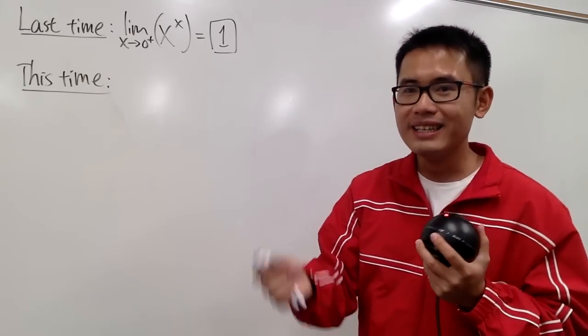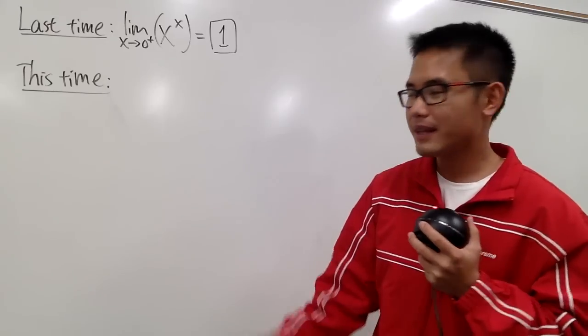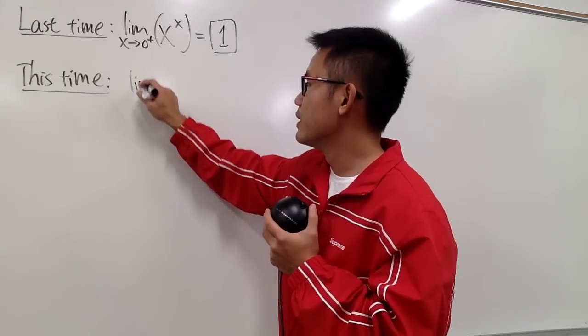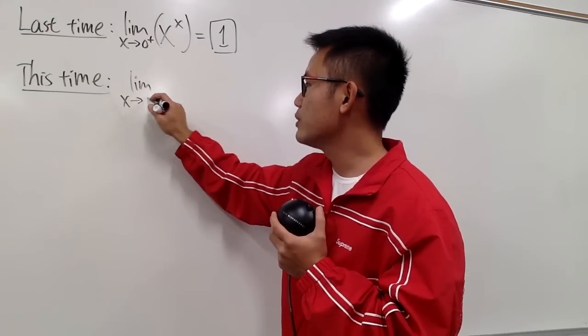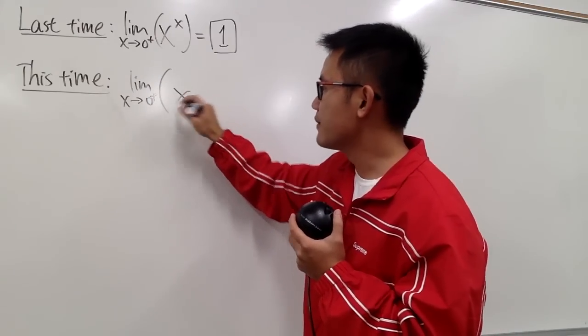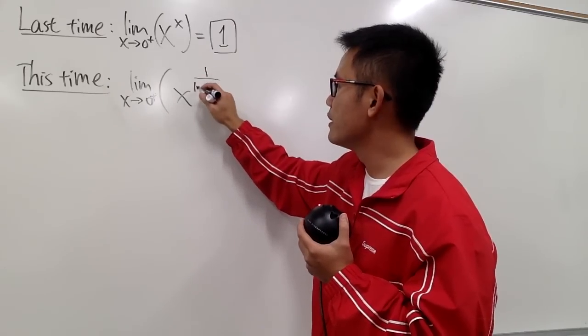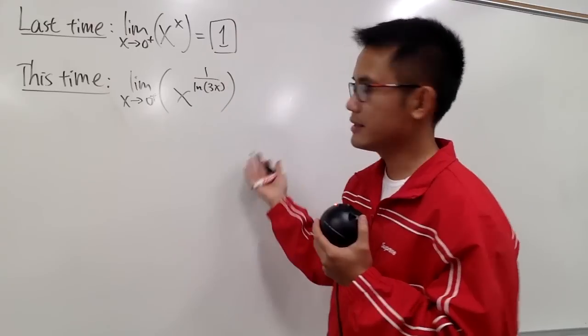I will give you guys a situation where 0 to the 0 is not equal to 1. Let's take a look at this limit. We take the limit as x goes to 0 plus, and let's look at x for the base, but for the power I will have 1 over the natural log of 3x, like this.